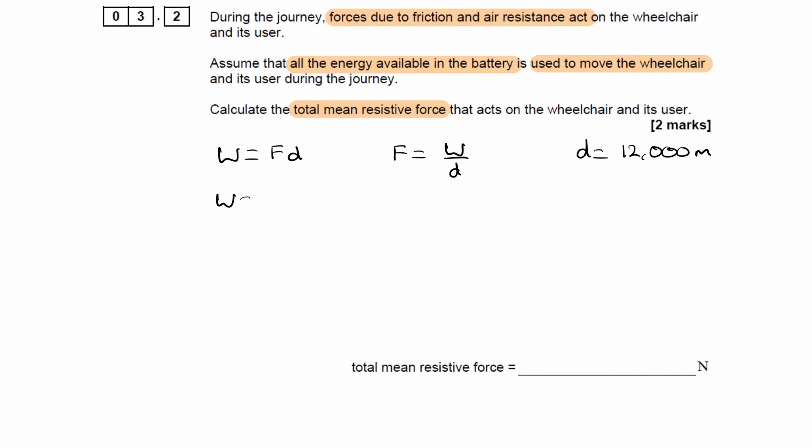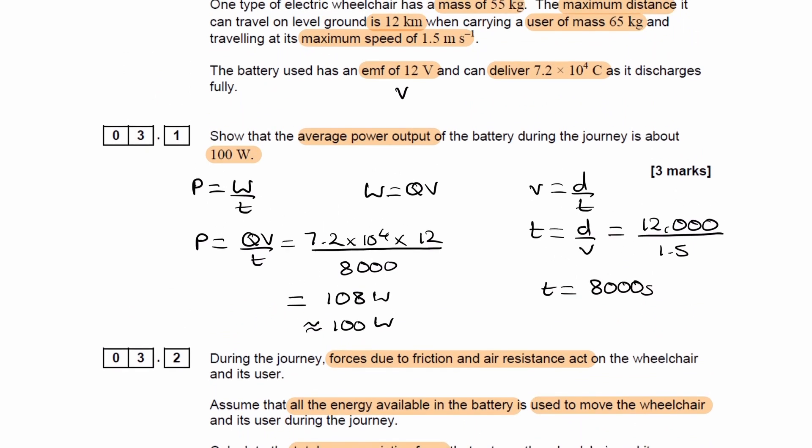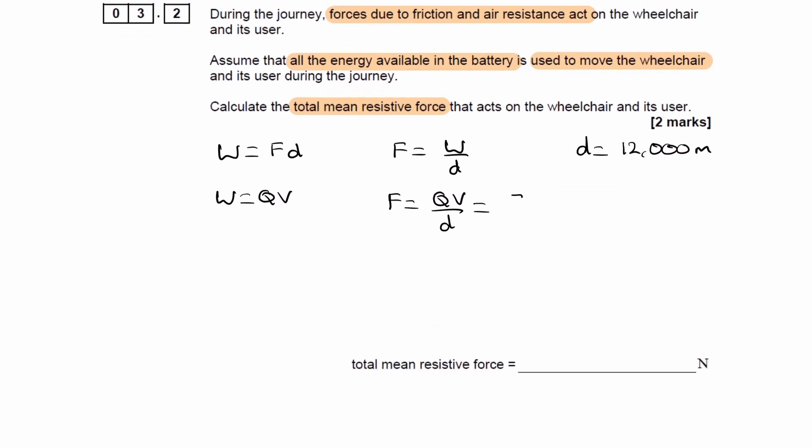The work done was QV, so the resistive force will be QV over distance. Q was 7.2 times 10 to the 4, and V was 12 volts. So 7.2 times 10 to the 4 times 12 volts all divided by the distance, which gives 72 newtons.